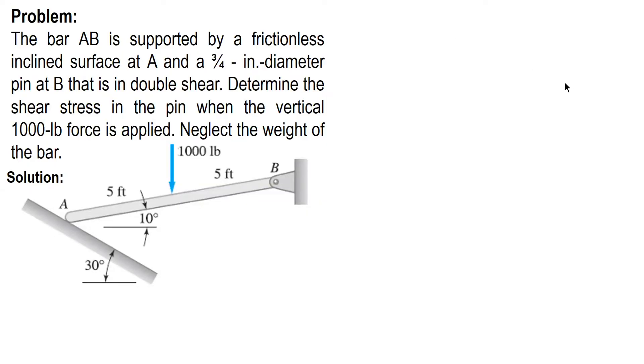In this video, I am going to solve a sample problem about shear stress. The bar AB is supported by a frictionless inclined surface at A and a 3/4-inch diameter pin at B that is in double shear. Determine the shear stress in the pin when the vertical 1000-pound force is applied. Neglect the weight of the bar.